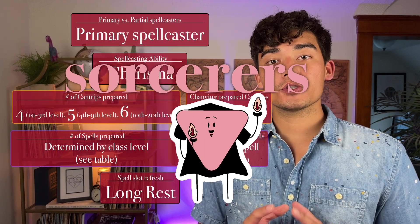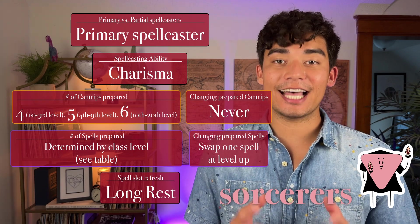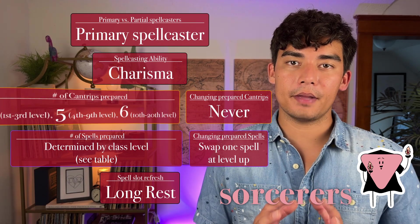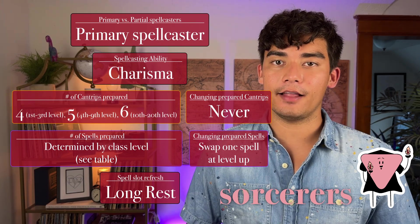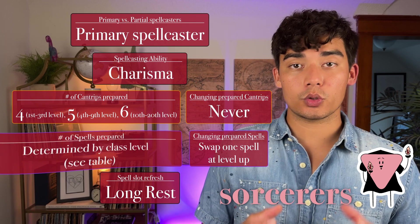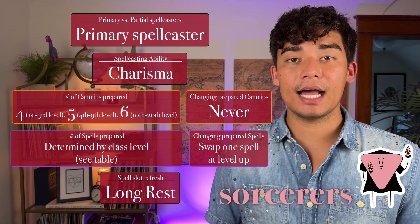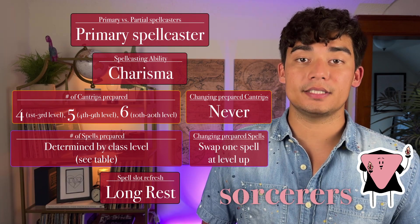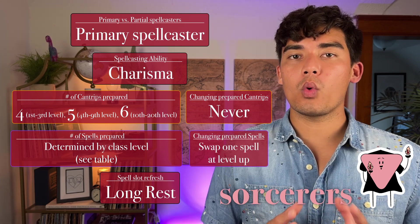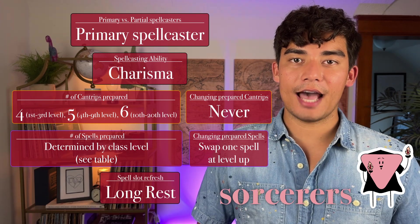Sorcerers are primary spellcasters, meaning they get access to level 1 through 9 spell slots as they level up. Their spellcasting ability is charisma. The number of cantrips they can prepare increases from 4 to 6 as they level up, and sorcerers cannot change their prepared list of cantrips. The number of spells a sorcerer can prepare is determined by their class level — check D&D Beyond for specifics. You can swap one spell every time your character levels up, and spell slots refresh after a long rest.